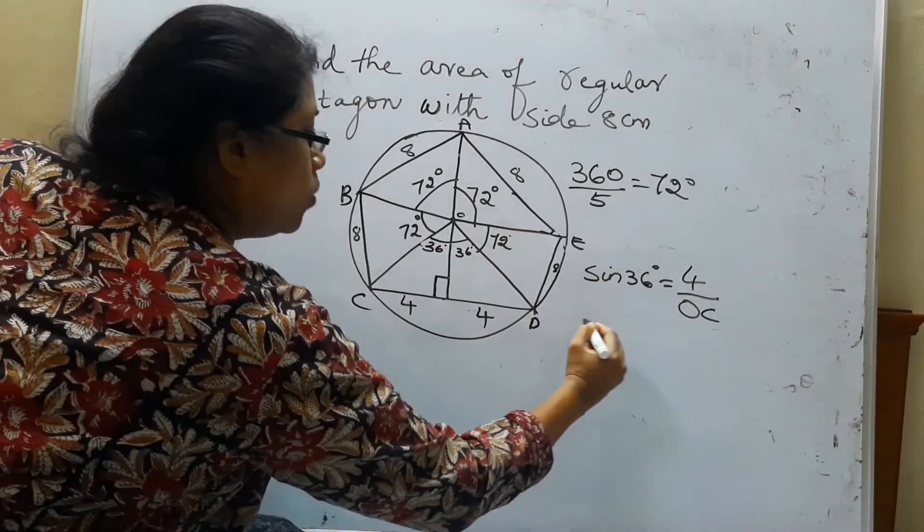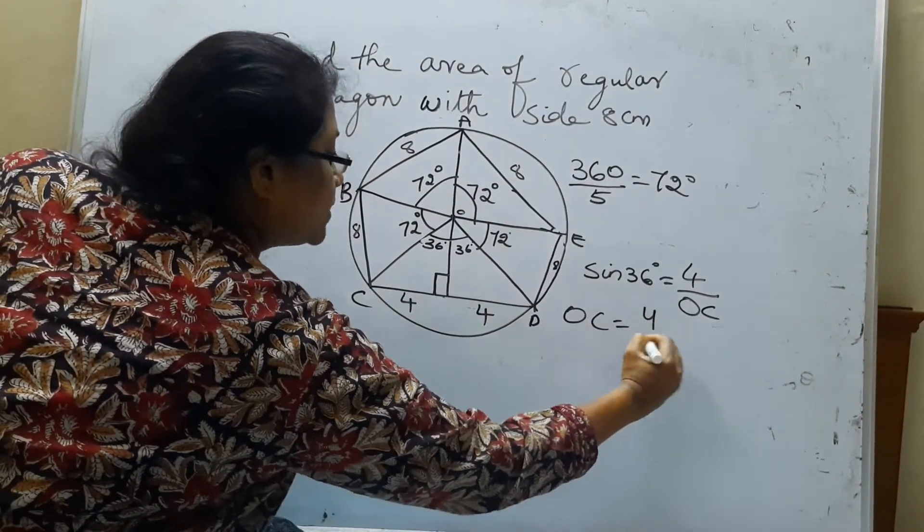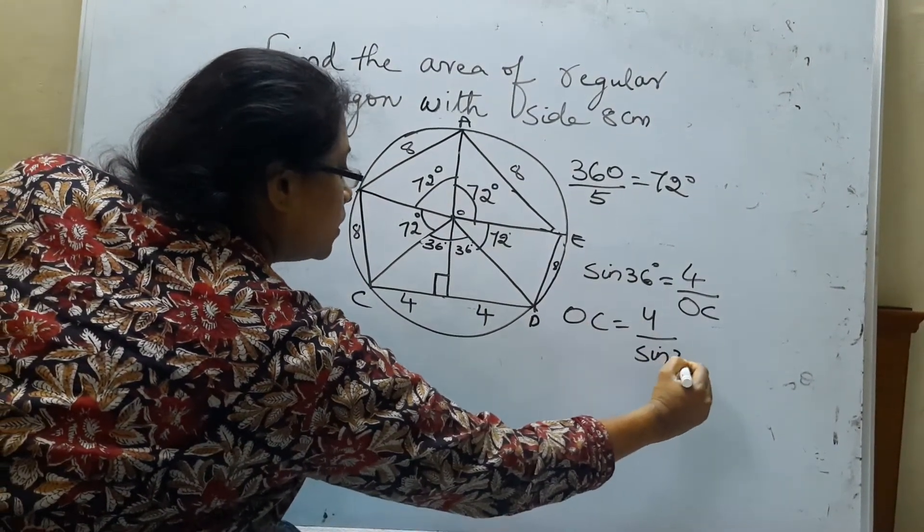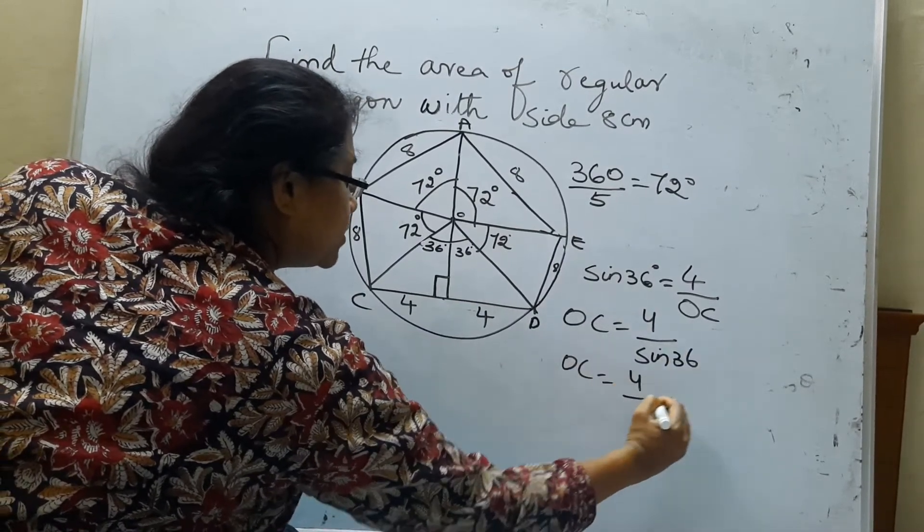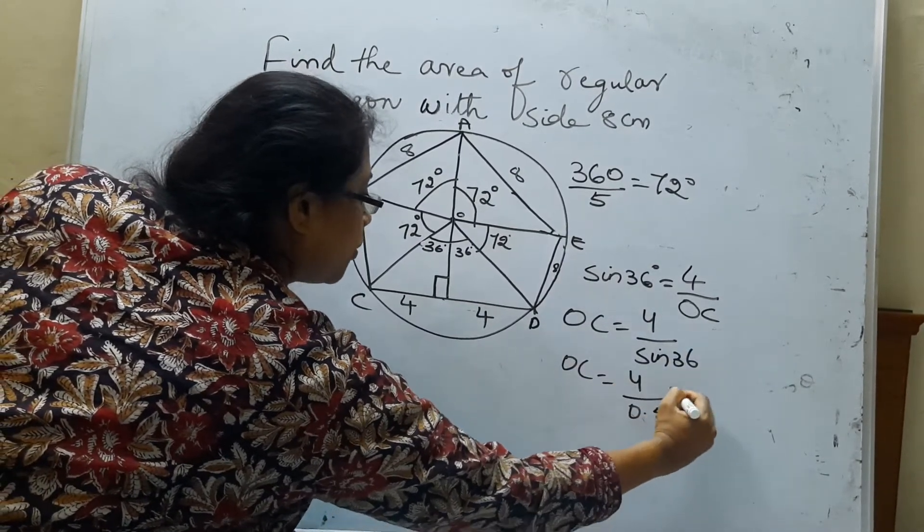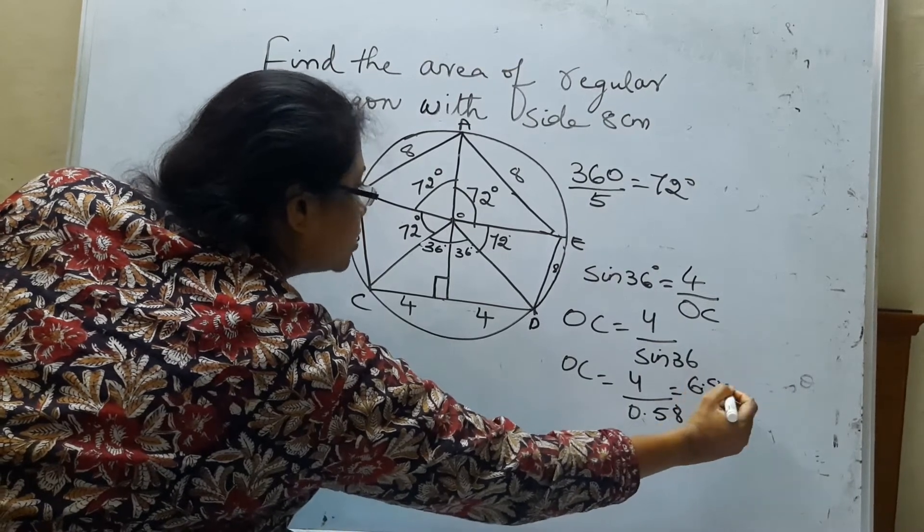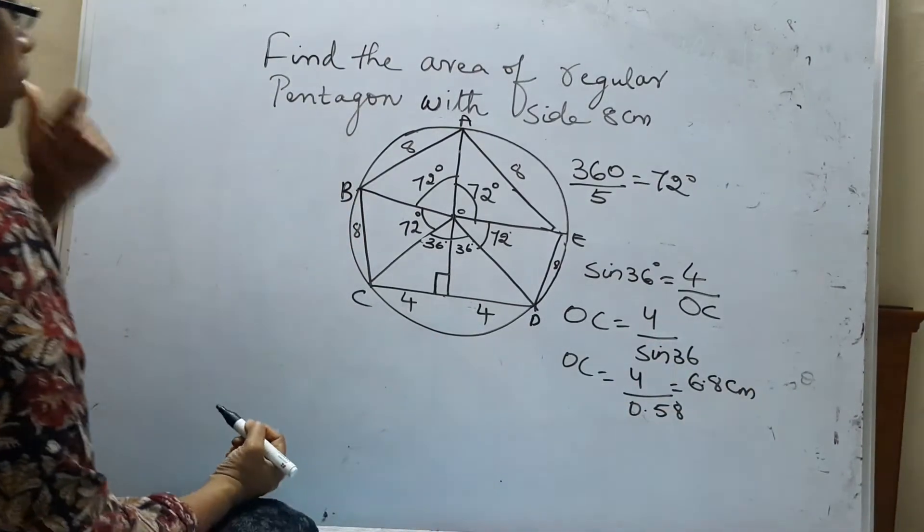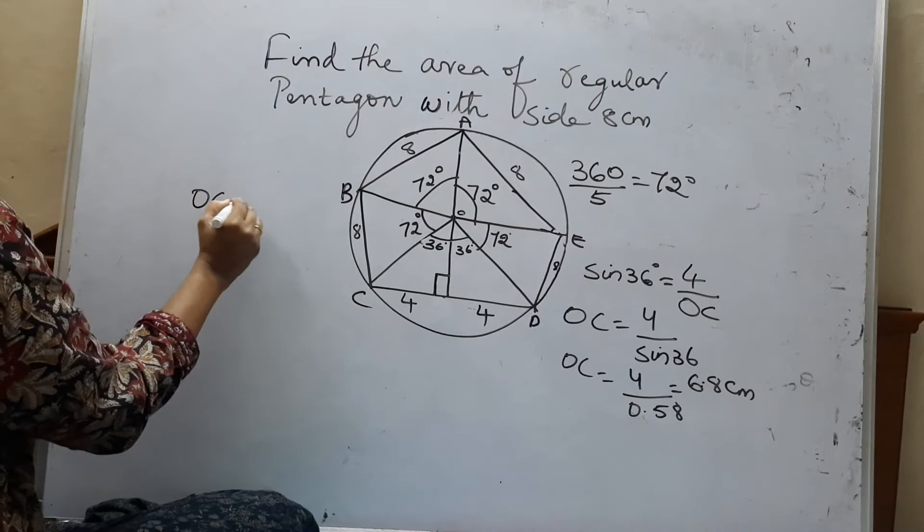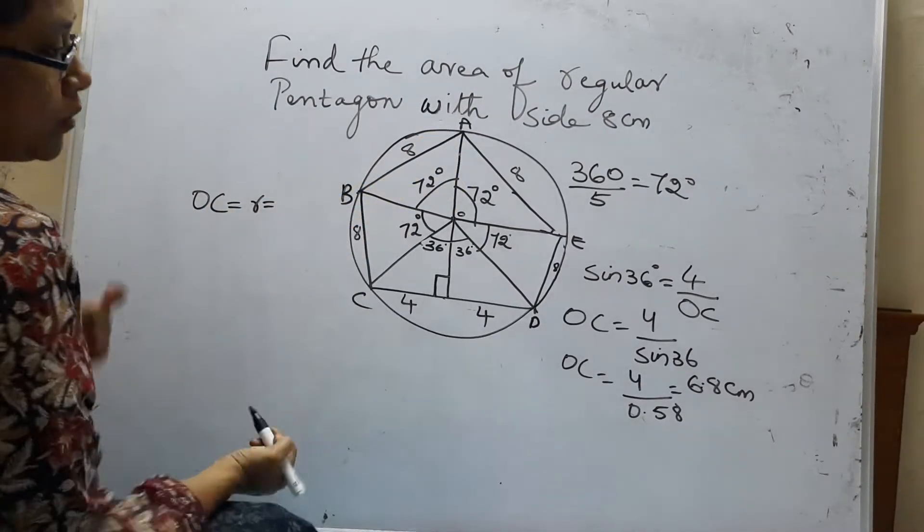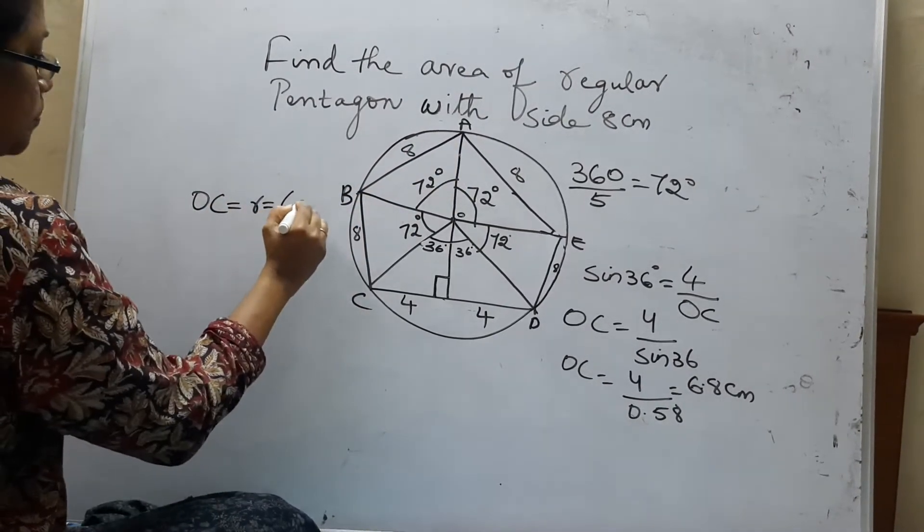Then OC is 4 by sin 36. Now sin 36 is 0.58 and this is 6.8. So 6.8 centimeters. Now we got OC as the radius. The radius is the same throughout the circle, 6.8 centimeters.